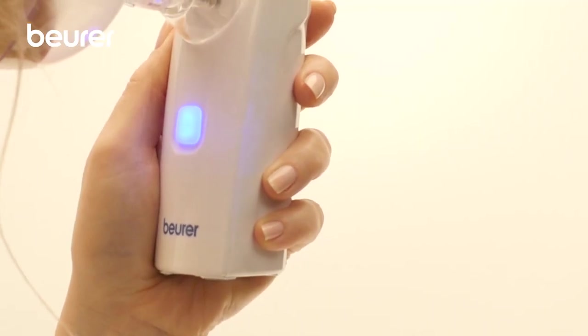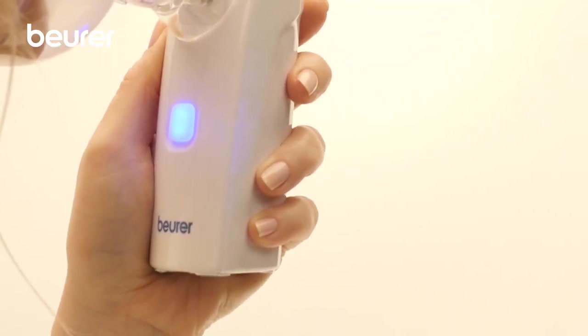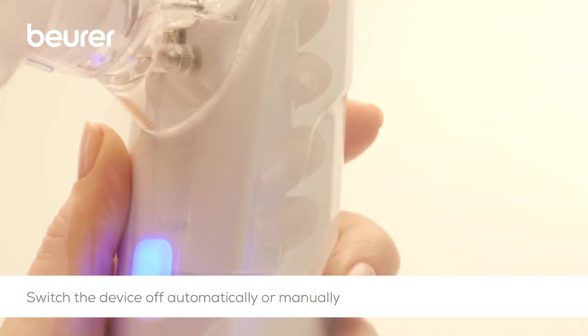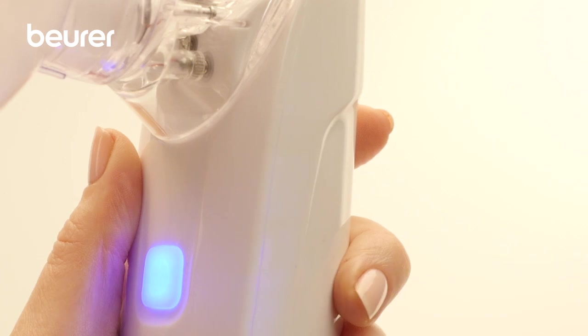Press the on-off button to switch off the device manually at any time. When using the mains part, disconnect the device from the power supply after use.